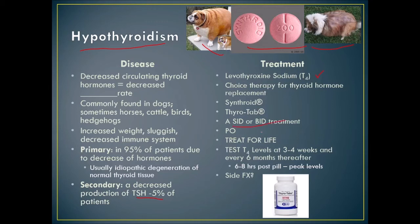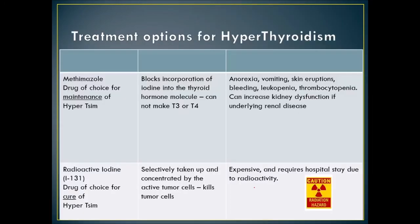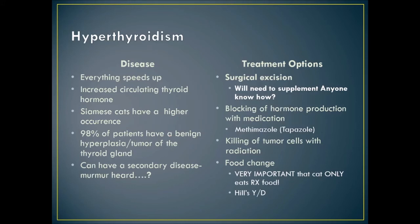Hyperthyroidism increases circulating thyroid hormone. Siamese cats have a higher occurrence. In 98% of patients there is a benign hyperplastic tumor of the thyroid gland. Secondary diseases can include cardiovascular disease — a murmur may be heard — and renal disease. Importantly, renal disease may be hidden by the hyperthyroidism, so watch for it when treating.